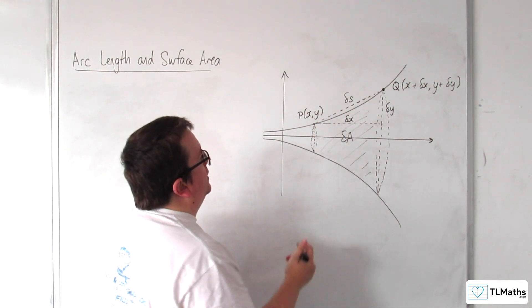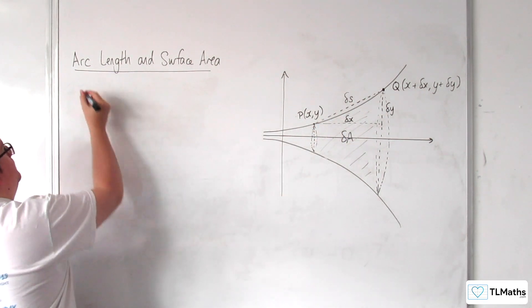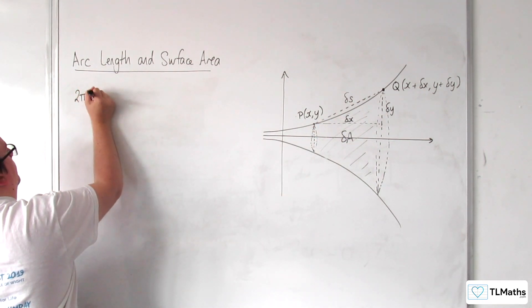The circumference of that circle, because the height there is y, would be 2πy.